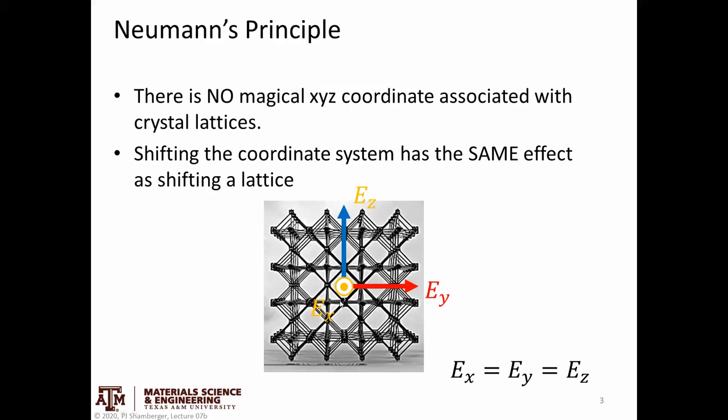When we think about the effect of measuring along different directions, we can think about it in terms of physically rotating the crystal, which is what I showed at the beginning of the video. But we can also think about it in terms of shifting and rotating that coordinate system.